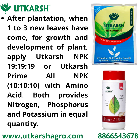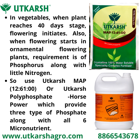After plantation, when 1-3 leaves have come, for growth and development of the plant, apply Utkarsh NPK 19-19-19 or Utkarsh Primal NPK 10-10-10, which is blended with amino acid. Both provide nitrogen, phosphorus and potassium in equal quantity.